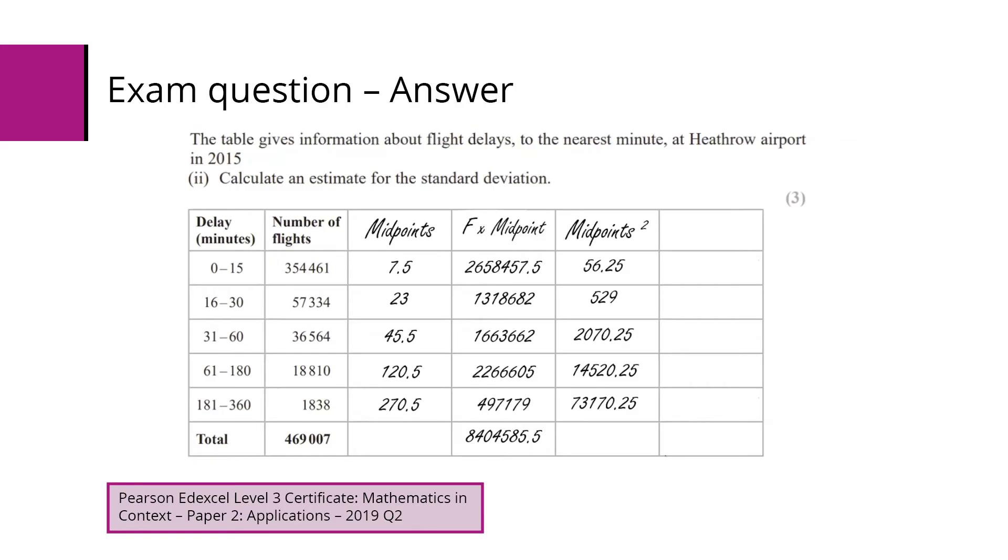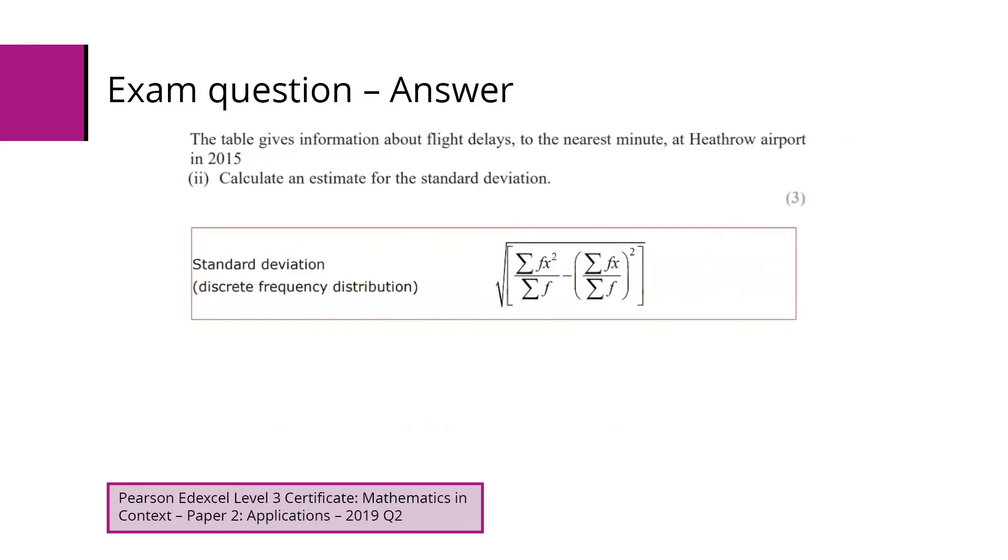There's no point adding those up. What we need to do is we need to do the frequencies again, the frequencies multiplied by the midpoints squared. That gives us quite large numbers and the sum of all of those is this one there, and we're going to need these bottom three numbers to substitute into that formula we were looking at earlier.